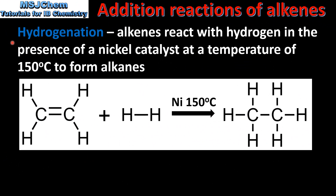The first addition reaction we'll look at is hydrogenation. Alkenes react with hydrogen in the presence of a nickel catalyst at a temperature of 150 degrees C to form alkanes. Here we have ethene reacting with hydrogen in the presence of a nickel catalyst at 150 degrees to form ethane. In this reaction an unsaturated molecule with a carbon to carbon double bond becomes a saturated molecule with a carbon to carbon single bond.